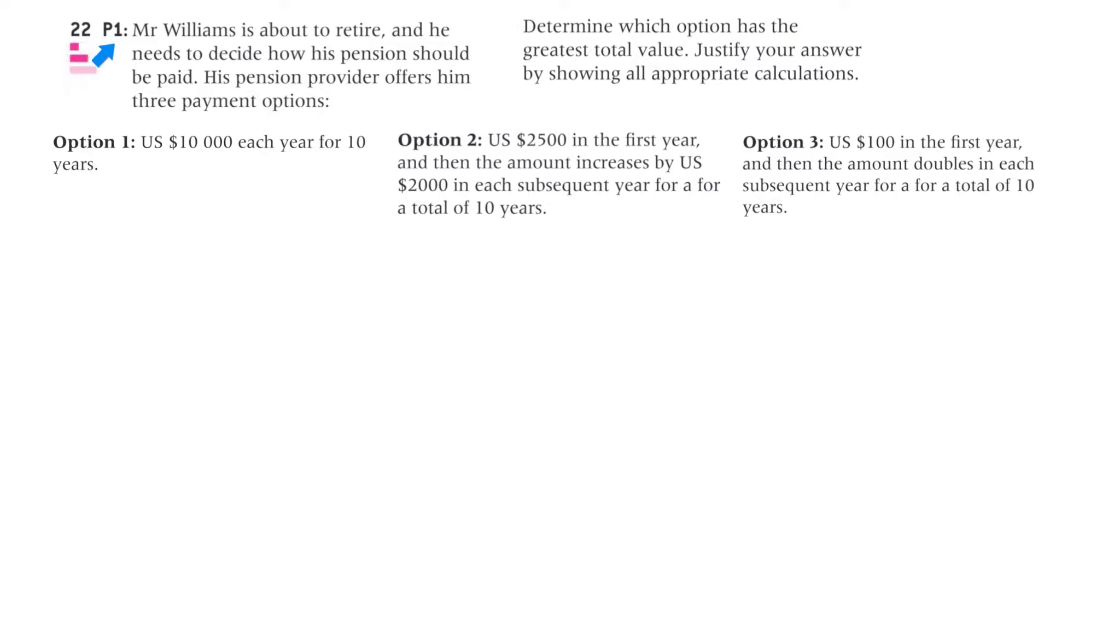Question 22, it's a paper 1 question. Mr. Williams, well there's a great name, is about to retire, and he needs to decide how his pension should be paid. His pension provider offers him three payment options. Option 1, option 2, and option 3. Determine which option has the greatest total value. Justify your answer by showing all appropriate calculations.